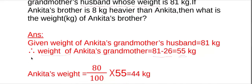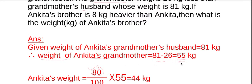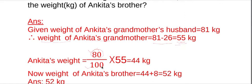Now, Ankita's weight is 20% less than her grandmother. Using the percentage formula, if we take Ankita's grandmother as 100, then Ankita's weight will be 80. Since Ankita's grandmother's weight is 55, Ankita's weight will be 80 by 100 into 55. Simplifying: 55 divided by 5 is 11, 100 divided by 5 is 20, and 80 divided by 20 is 4. So 4 into 11 equals 44 kg. Ankita's weight is 44 kg.